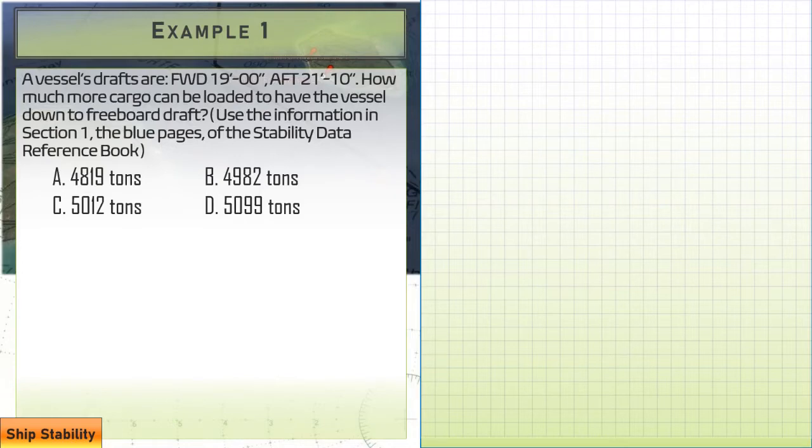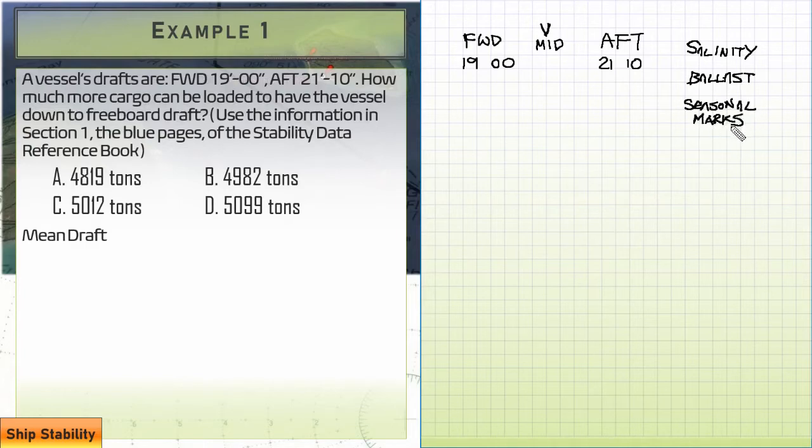Our first question: a vessel's drafts are FWD 19'-00", AFT 21'-10". How much more cargo can be loaded to have the vessel down to freeboard draft? Use the information in section one, the blue pages of the Stability Data Reference Book. The first thing we're going to need to do is calculate our mean draft. That's the average draft between the forward and aft draft marks, and that's going to be roughly midships draft. So we have 19 feet forward, 21'-10" aft, and we're going to be looking to calculate the mean, which is the approximate midship draft. So a little side note before we start, we're not really going to be concerned with salinity, ballast, or seasonal load line markings. With these particular questions, the Coast Guard is only concerned that you understand adding cargo increases the draft. That's it. So let's get our mean draft.